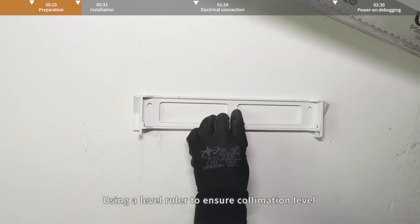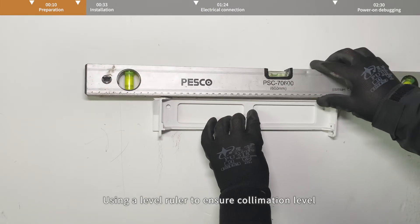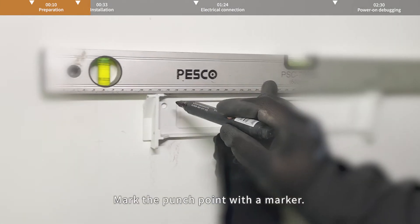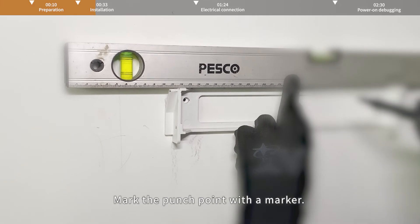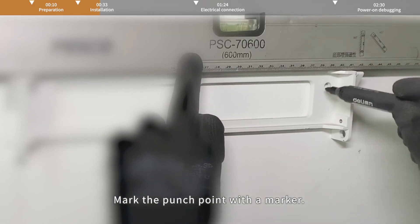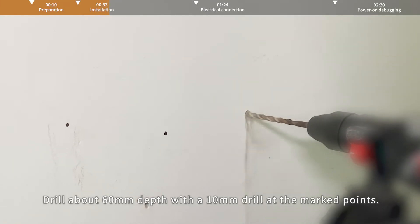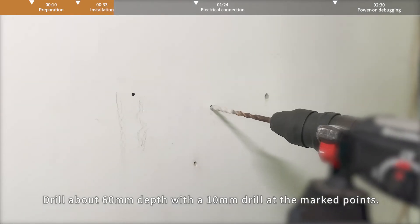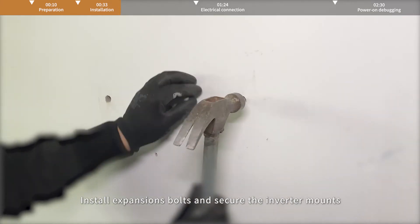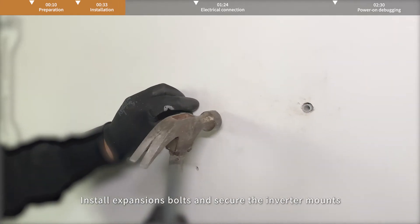Using a level ruler to ensure collimation level, mark the punch point with a marker. Drill about 60 mm depth with a 10 mm drill at the marked points. Install expansion bolts and secure the inverter mounts.